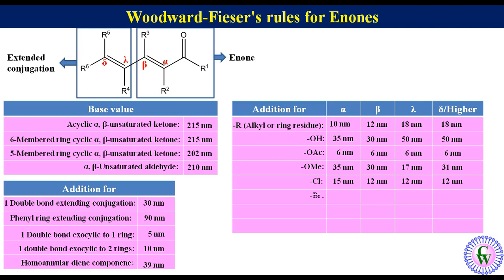Continuing the substituent addition values: for a bromo group at alpha, beta, gamma, and delta positions, the values are 25, 30, 25, and 25 nm. For a sulfide group: 0, 85, 0, and 0 nm. For an amino group: 0, 95, 0, and 0 nm.